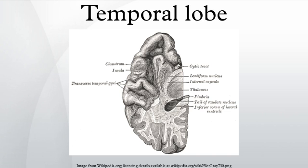Language recognition: The left temporal lobe holds the primary auditory cortex, which is important for the processing of semantics in both speech and vision in humans. Wernicke's area, which spans the region between temporal and parietal lobes, plays a key role in speech comprehension. The functions of the left temporal lobe are not limited to low-level perception but extend to comprehension, naming, and verbal memory.